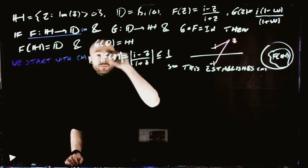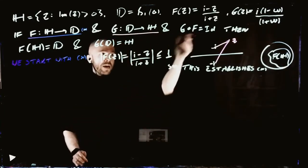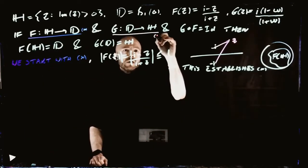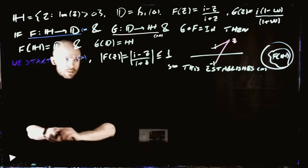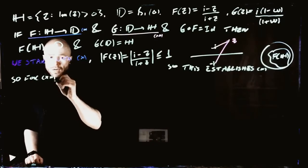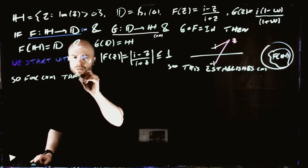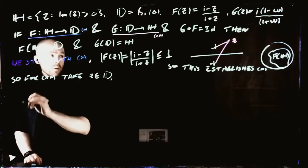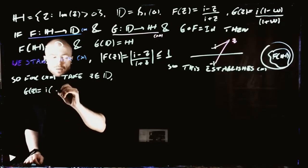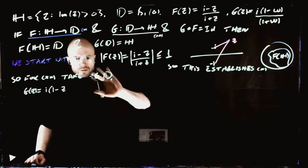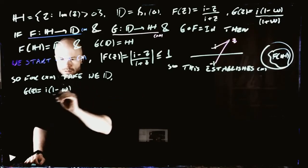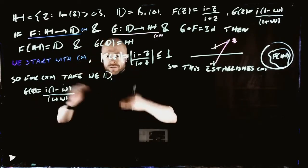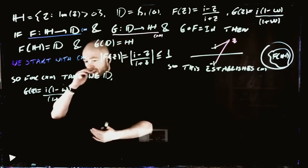Next we want to show that the disk is being sent into the upper half-plane by our mapping g — it's a bit more complicated. Let's call that star star. For star star, we take w inside the disk and consider our mapping g of w, which is i times 1 minus w, over 1 plus w. What we want to show is that the imaginary part of this expression is positive.